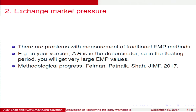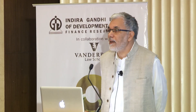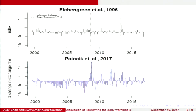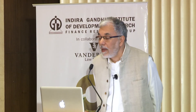Ajay Shah's second comment concerns exchange market pressure measurement. Traditional EMP methods have problems — for example, sigma-R appears in the denominator of the formula. When India floats the exchange rate, as during Subbarao's tenure where reserve volatility basically went to zero because he was not trading the currency market, you get falsely large EMP values. Methodological progress has been made — he references a paper with Ila Patnaik on improved EMP measurement methods and suggests the authors adopt these improved methods.